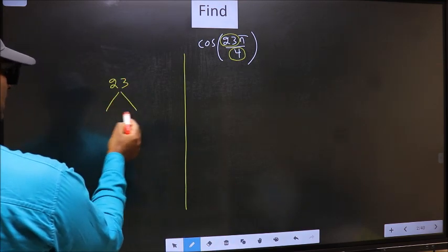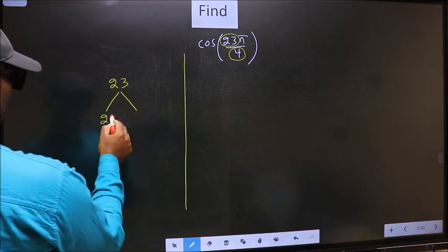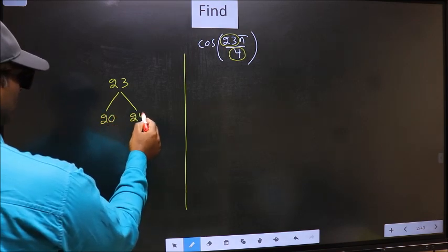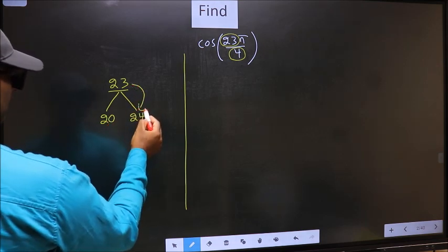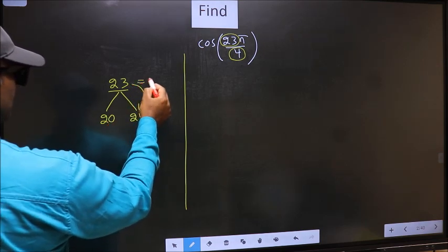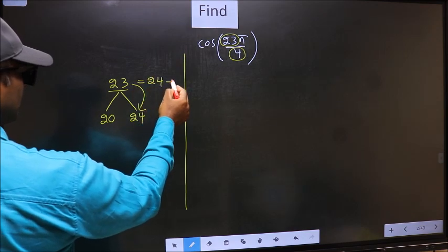23. And here you write multiples of 4: 20, 24. Now 23 is close to which multiple? This is close to 24. So 23 should be written as 24 minus 1.